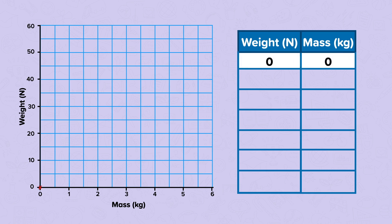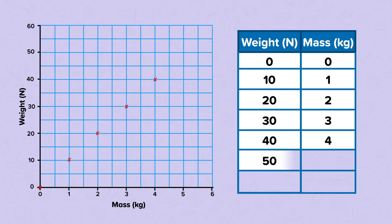Our first point is at 0, 0. The second point will have a weight of 10 newtons and a mass of 1 kg. The next point is 20 newtons and 2 kg. Then we have 30 newtons and 3 kg. 40 newtons and 4 kg. 50 newtons and 5 kg. 60 newtons and 6 kg. To show the pattern of these points, we will then draw a line of best fit.